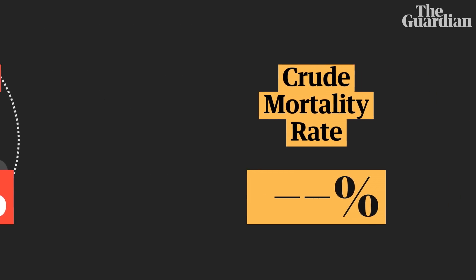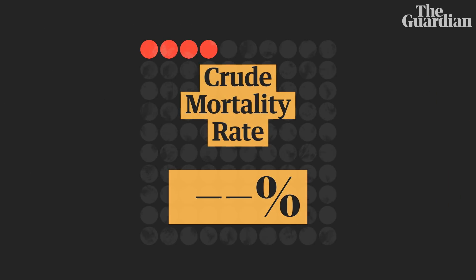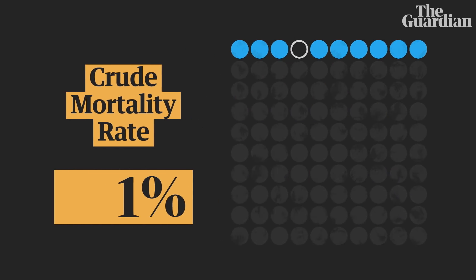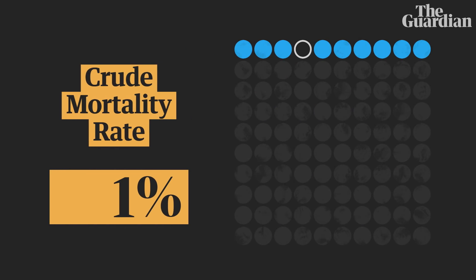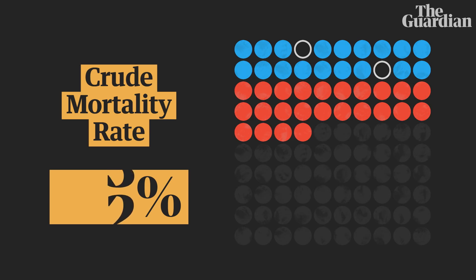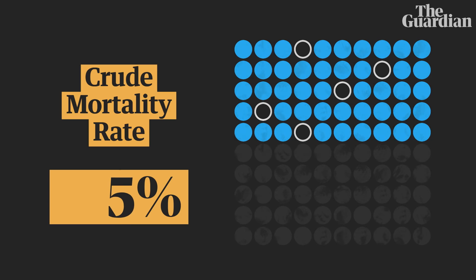Then there's the crude mortality rate. That tells us the risk of dying relative to the whole population — or, put another way, what portion of the population has died from this disease? But because we don't know how many people will end up being infected, we won't know this figure until the disease has run its course.